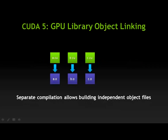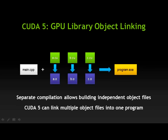With CUDA 5 and GPU object linking, we allow for separate compilation of the source files to build independent object files for your GPU code. Users can then link the code together to create a single program in a much more natural flow that you're used to with CPU compilers.